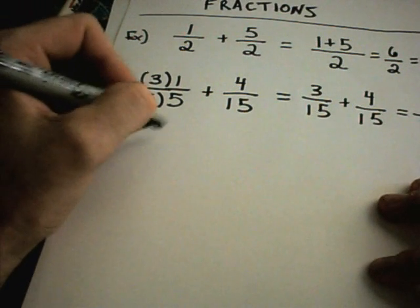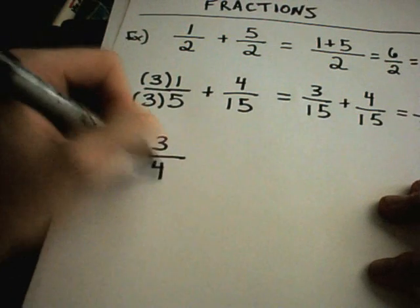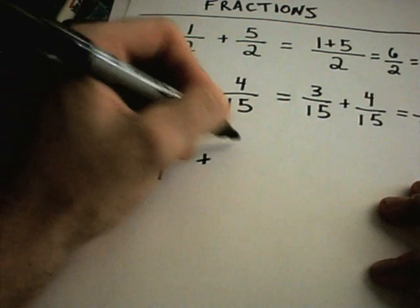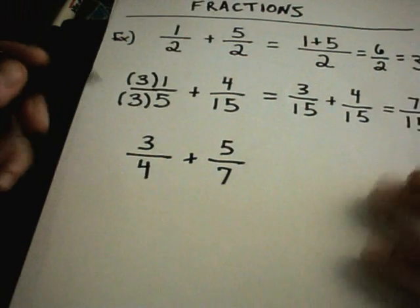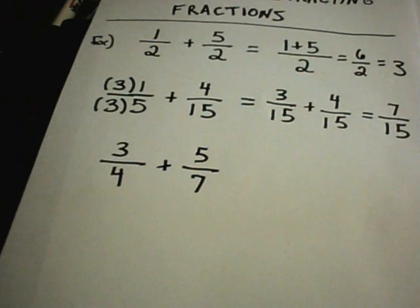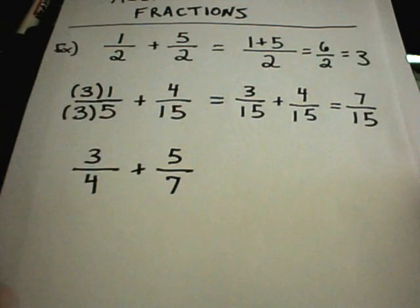Likewise, sometimes you may have to change both of them. Suppose I have 3 over 4 and 5 over 7. Again, you have to find the smallest number that both 4 and 7 will go into.